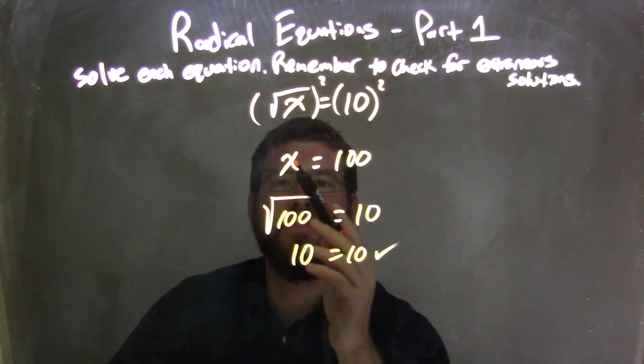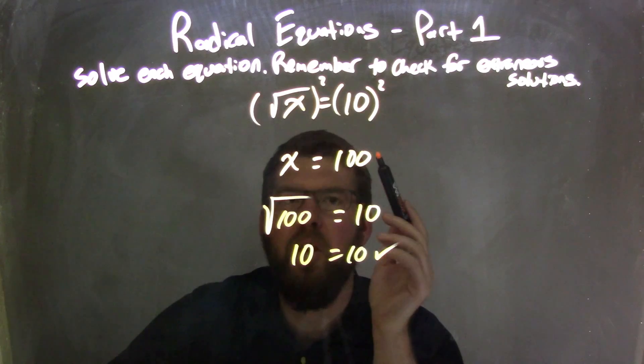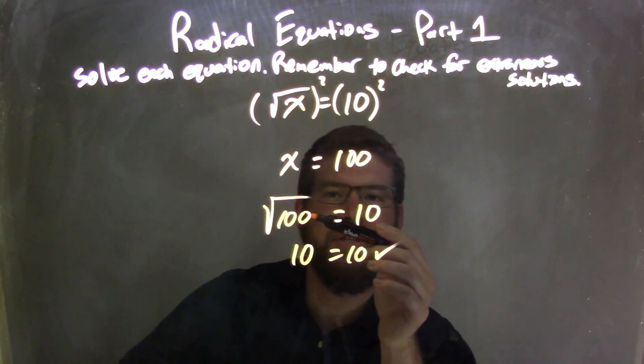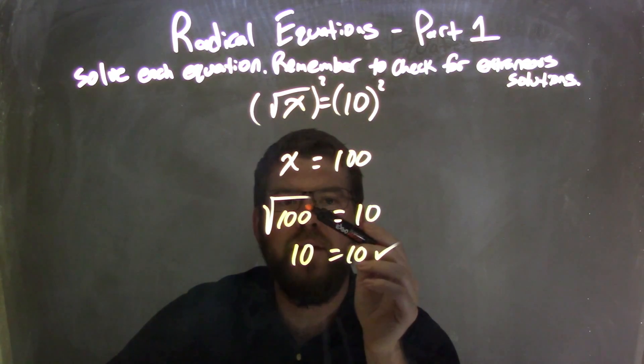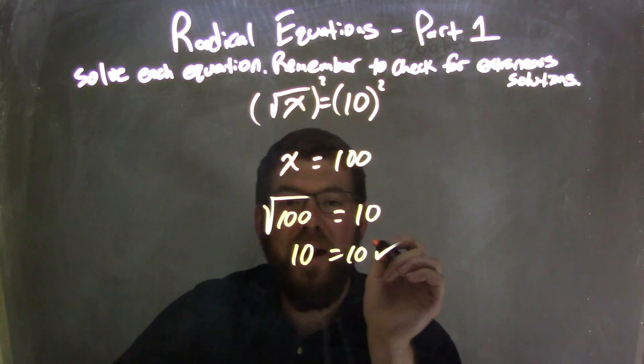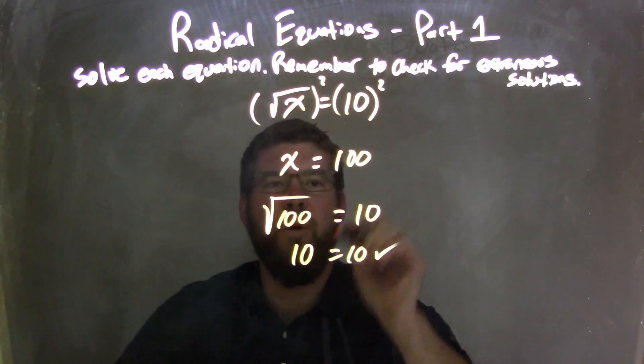Well, when I plug it back in, when I plug that 100 back in the original equation to check, the square root of 100 does, in fact, come out to be 10. And so, we're good. This equation is true. And so, our final answer is x equals 100.